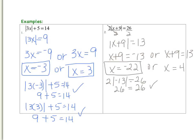Now let's try the 4. So what is 4 plus 9? Positive 13. So I have 2 times the absolute value of 13 equals 26. We know the absolute value of 13 is 13, so 2 times 13 is 26. So this one also checks out. So again, I have 2 good solutions here.